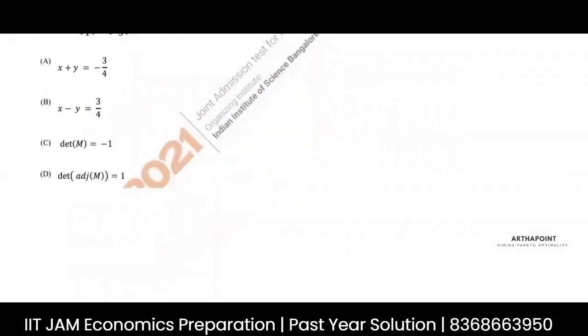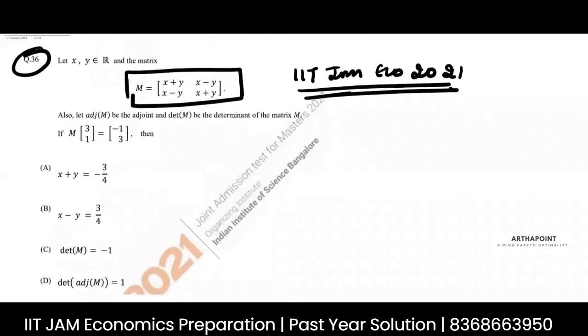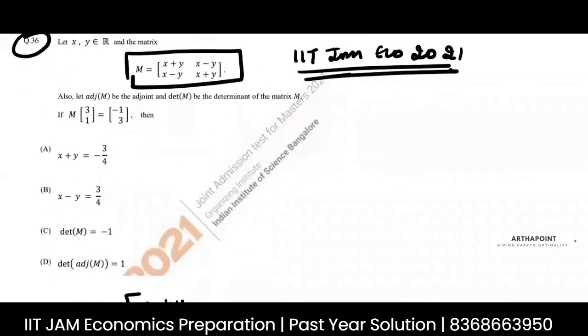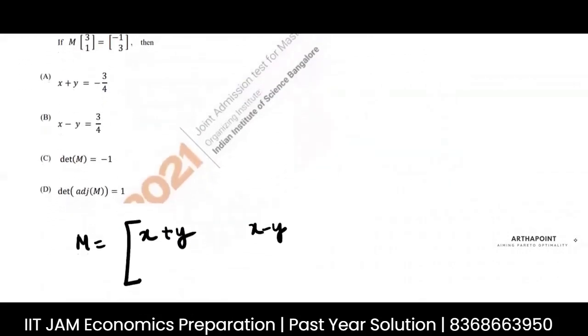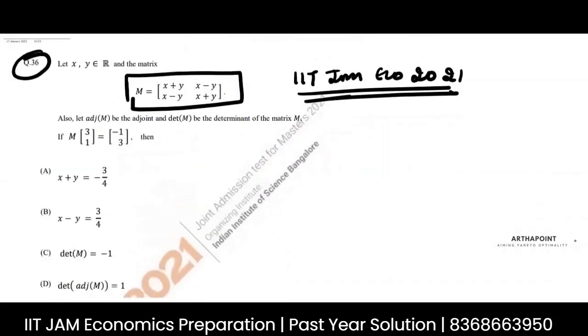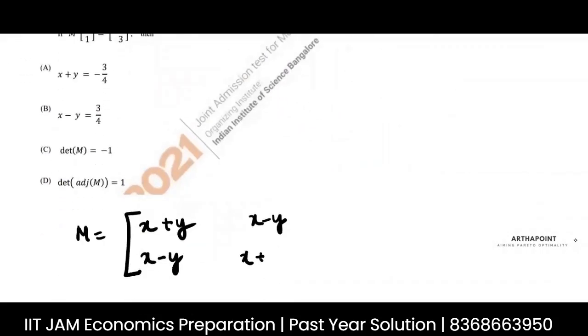What is the matrix? The matrix is X plus Y, X minus Y, X minus Y, and X plus Y. This is the matrix given to you.